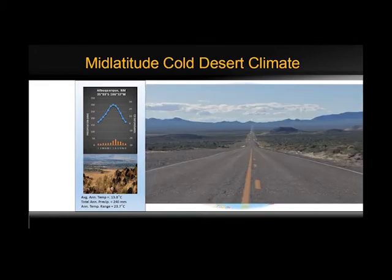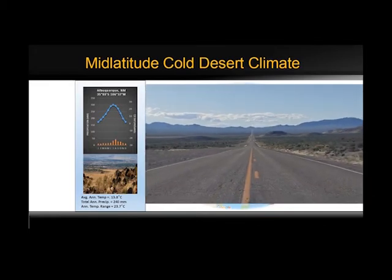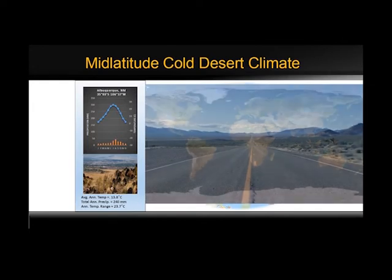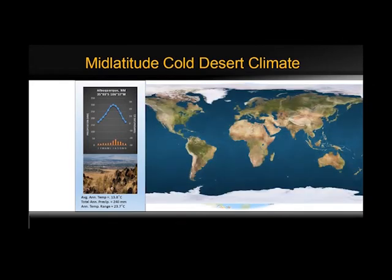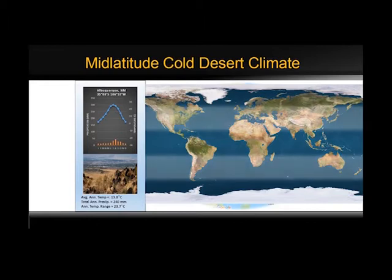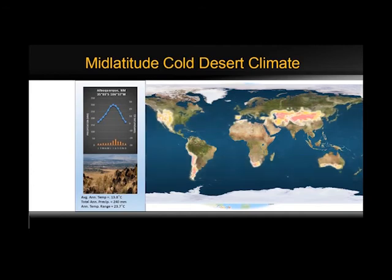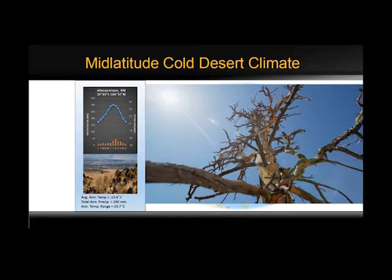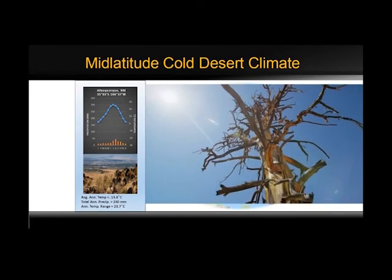Precipitation is sparse as the interior location is distanced from moisture sources, as seen in data from Albuquerque, New Mexico. The lack of rainfall is also due to the leeward rain shadow location. Like the tropical desert, precipitation is irregular and unreliable. Relative humidity is quite low when the region is dominated by continental tropical air masses during the summer, as in Albuquerque, New Mexico.